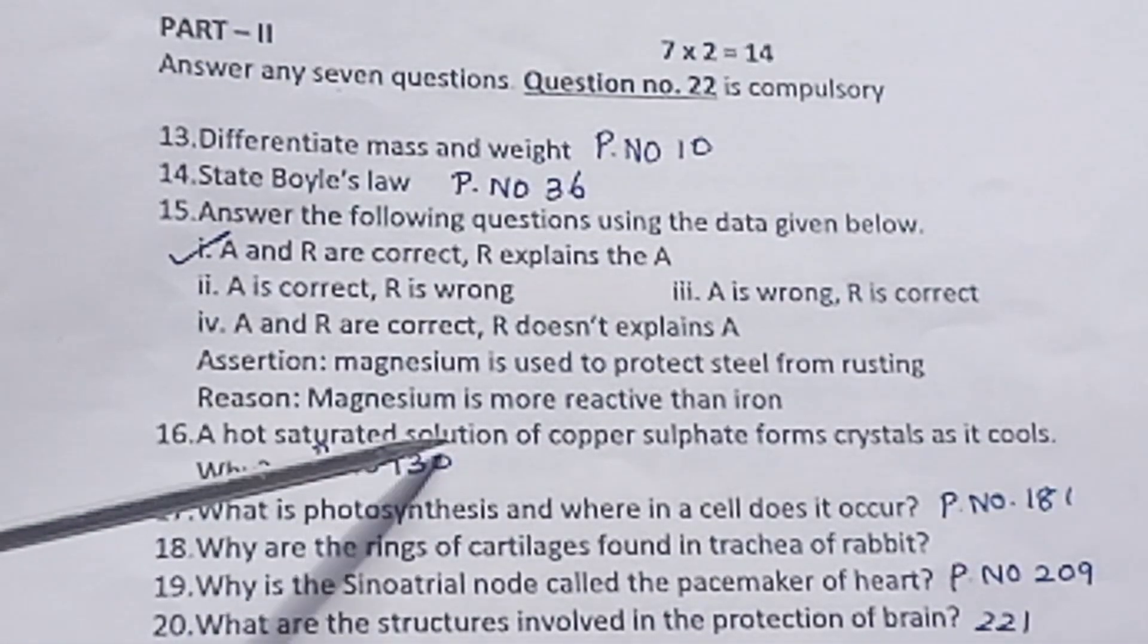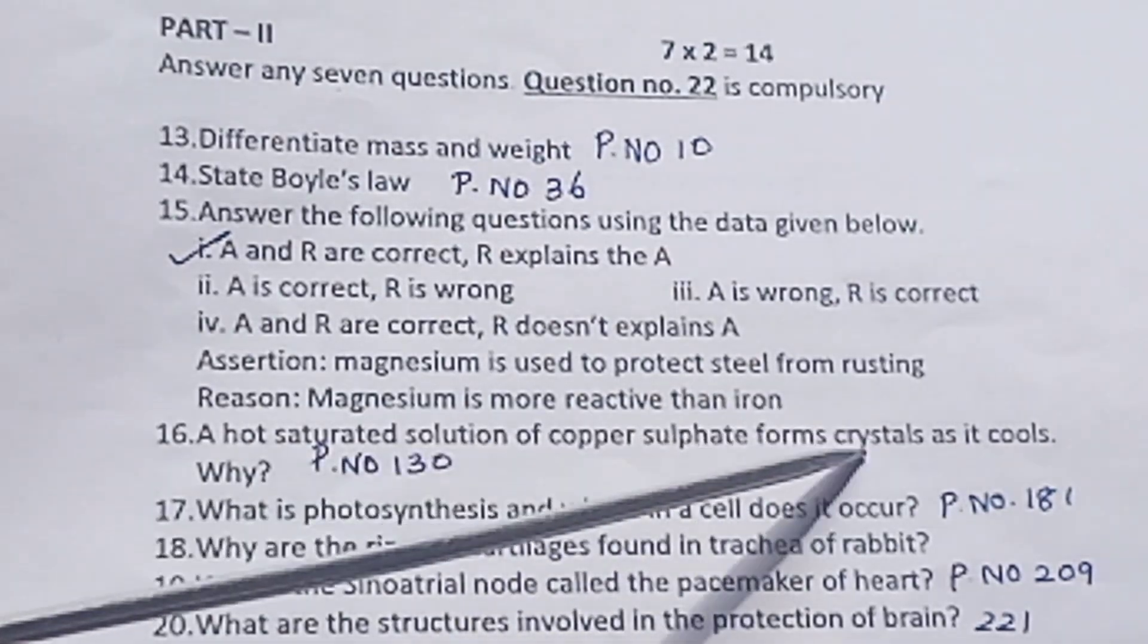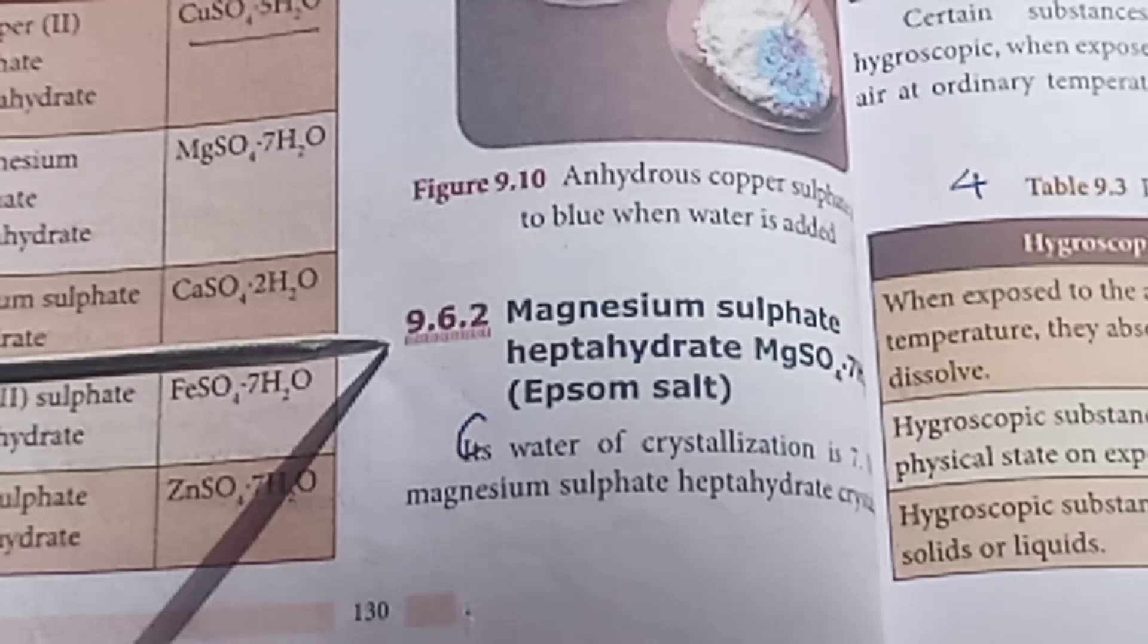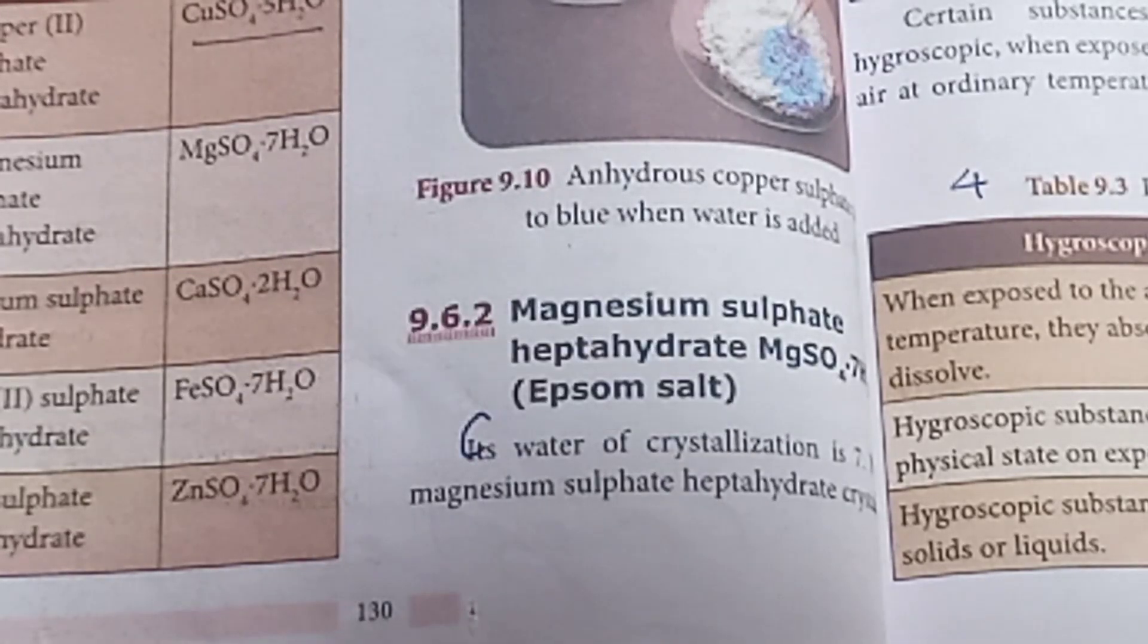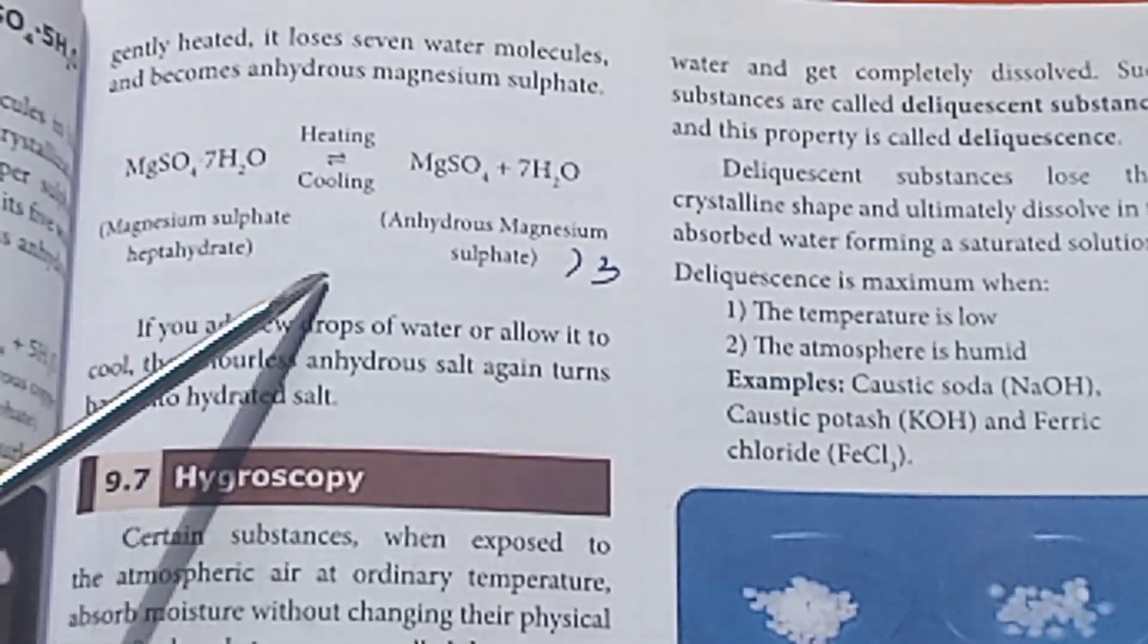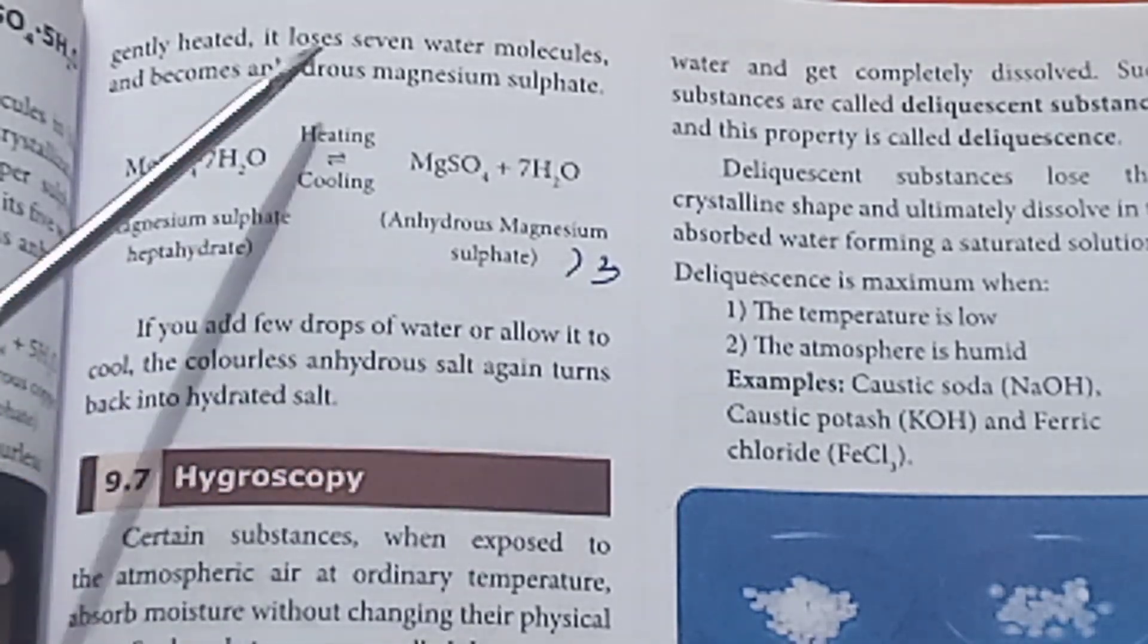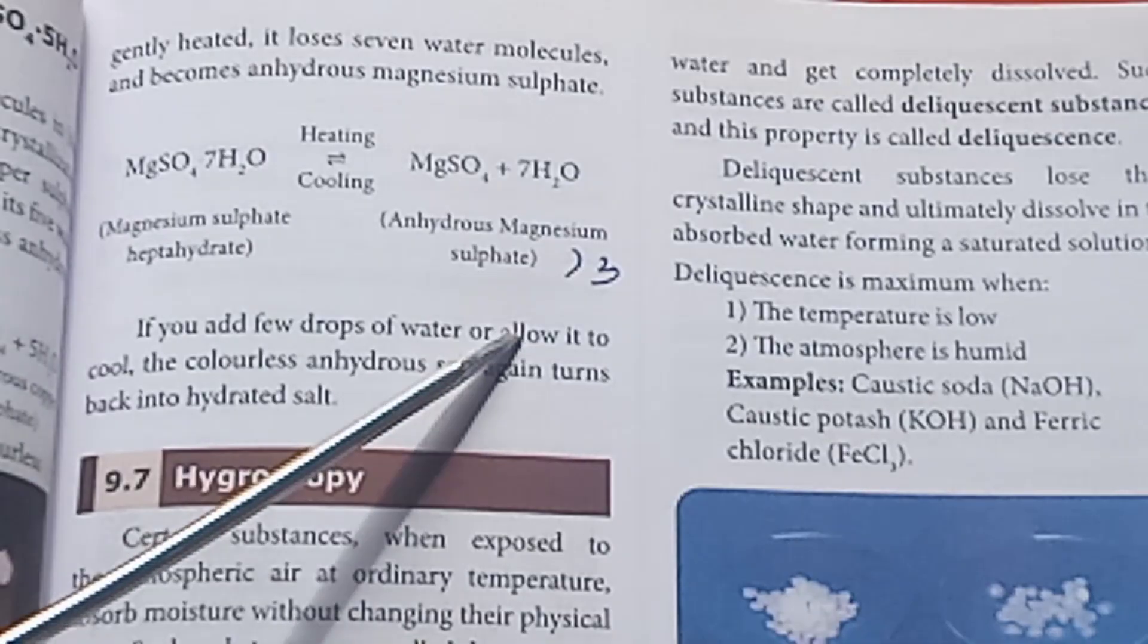Question 16: A hot saturated solution of copper sulfate forms crystals as it cools. Why? Page number 130. Water of crystallization. Page number 131, up to this equation is the answer.